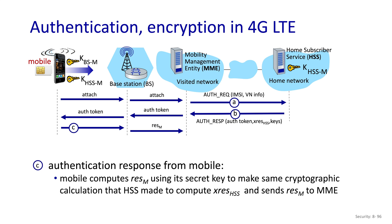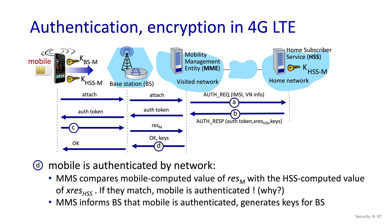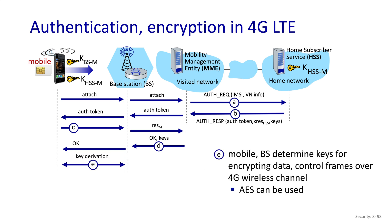The mobile device generates the authentication response and sends it back to the visited network. The visited network is then able to validate it because it knows what the authentication response should be, thanks to the home network sending it previously. At that point, the mobile is authenticated by the visited network, which can then generate session keys for the base station. The mobile device also performs key derivation, and the wireless channel now has a shared symmetric key used with the AES protocol.